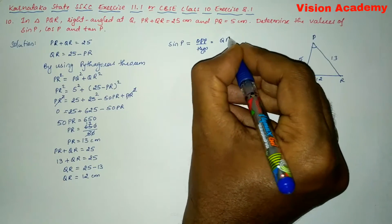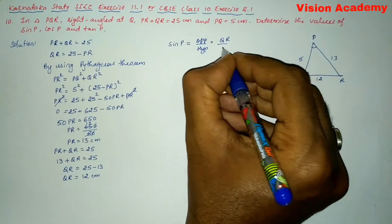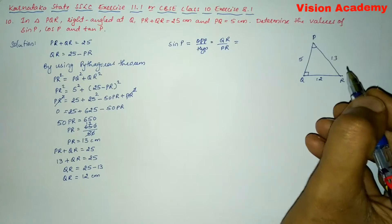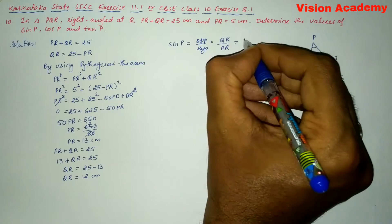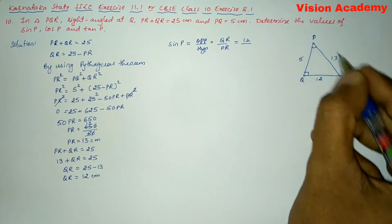So opposite is QR and hypotenuse is PR is equal to, here QR is 12 and PR is 13.